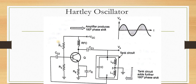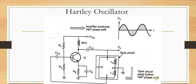When using this common-emitter amplifier, it automatically provides a 180-degree phase shift. According to the Barkhausen criteria, the oscillator must produce a total phase shift of 0 or 360 degrees. Since the amplifier produces 180 degrees, the feedback tank circuit must provide an additional 180 degrees to satisfy the criteria.